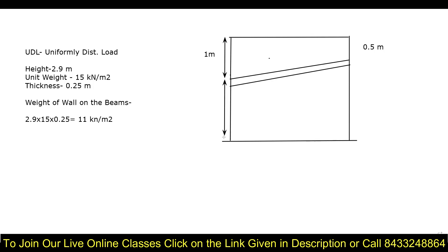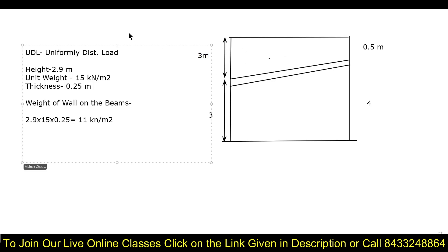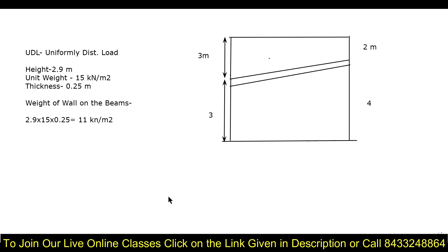Let's make a small structure to demonstrate. We'll take a height of 3 meters on one side, 4 meters at the next point, then create a slanted roof. The next level will be at 6 meters, and we'll have 2 meters at another point. We'll create this model in Tekla Structural Designer, apply the UVL, and understand the concept behind it.